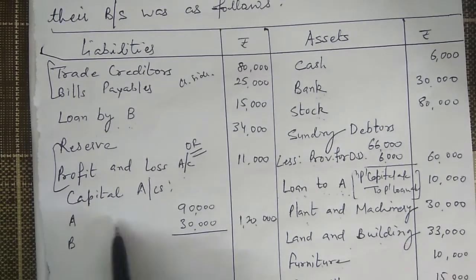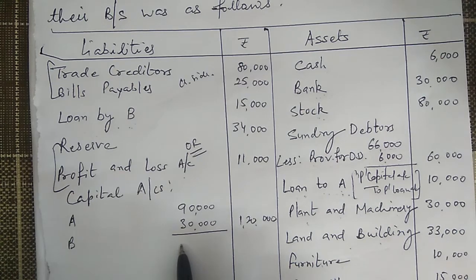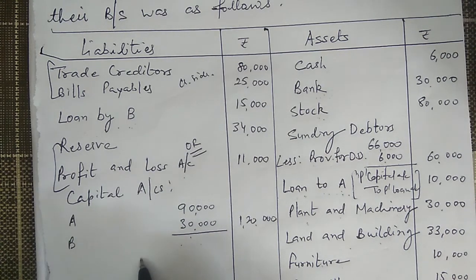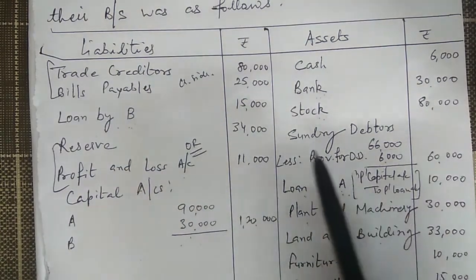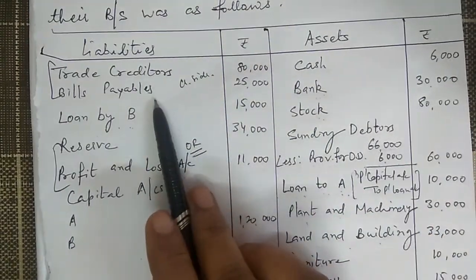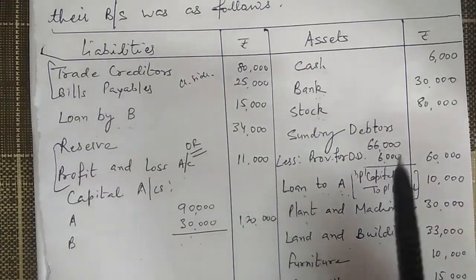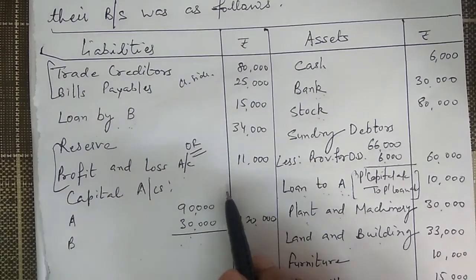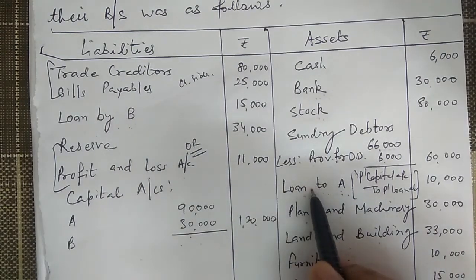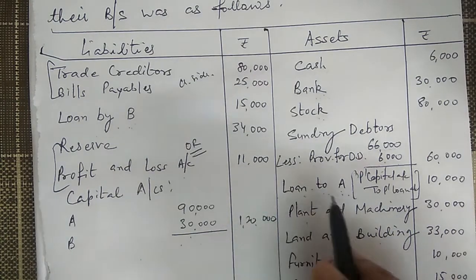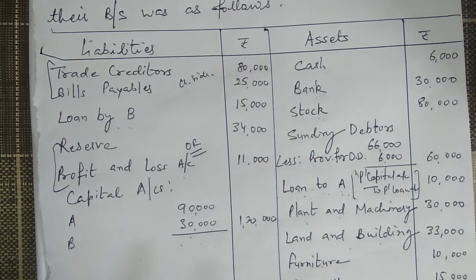The partners' capital accounts for A and B also need to be opened. If the capital balance is credit, we show 'by balance brought down'; if it is a debit balance, 'balance brought down' on the other side. So in summary: all assets and liabilities of the dissolution firm's balance sheet are placed one time only — either in the realization account, partners' loan account, partners' capital account, or bank account.